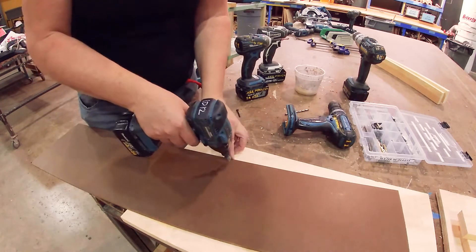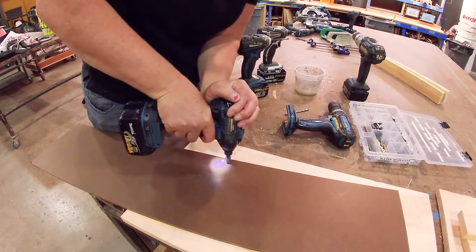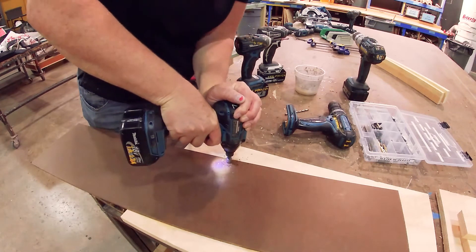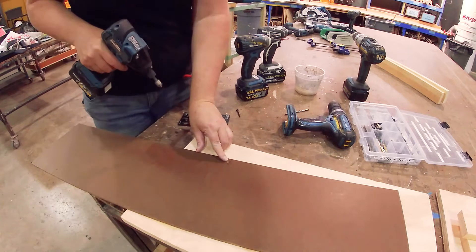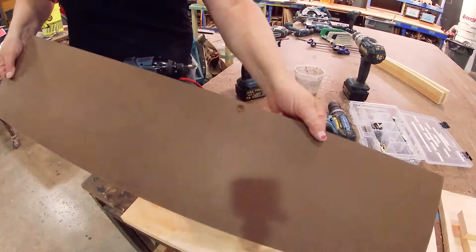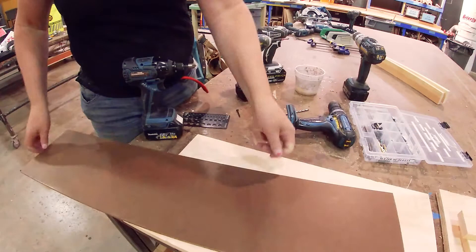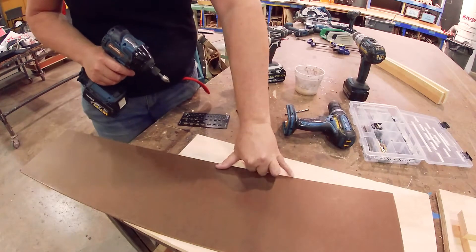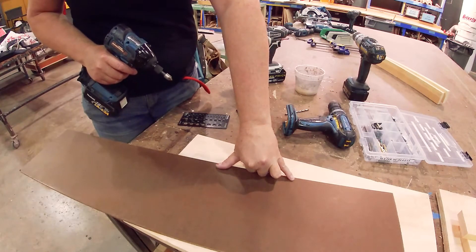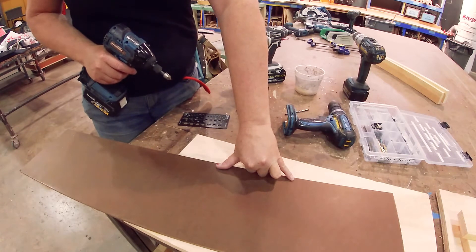But we go along the edge with this and we go just like that, and we usually go about six to eight inches apart depending on the size of the masonite.